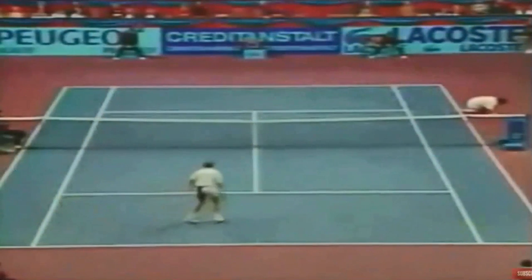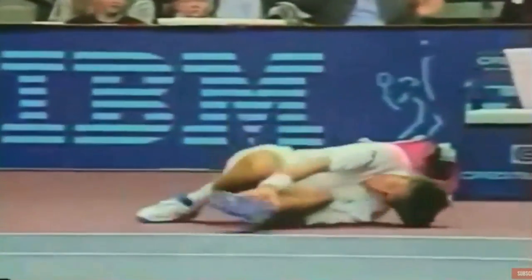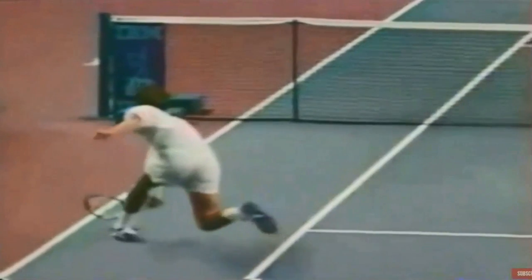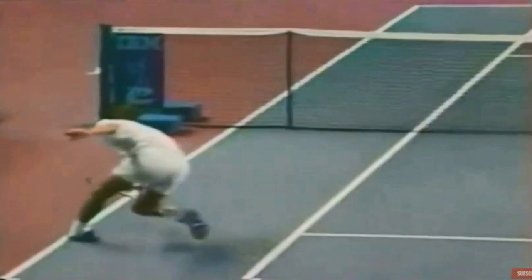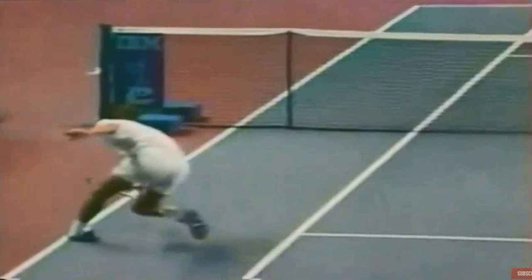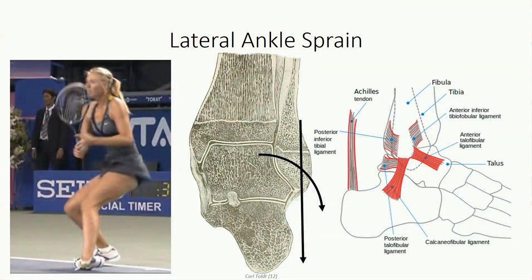In a third-degree tear, we see complete tearing of the anterior talofibular ligament and sometimes the calcaneofibular ligament. The individual will not be weight-bearing and there will be great joint instability. A standard test is the anterior drawer test, where the physician stabilizes the tibia and fibula, places a hand behind the calcaneus, and pulls forward — in a grade 3 tear, this typically produces subluxation of the ankle joint as the talus moves forward relative to the tibia and fibula. The anterior talofibular ligament is always affected in these injuries; the posterior talofibular ligament is typically not involved due to its strength and position.